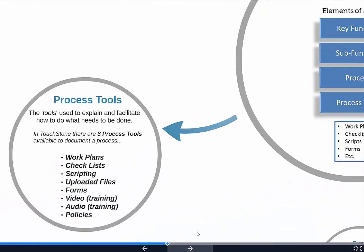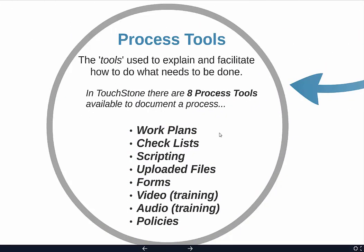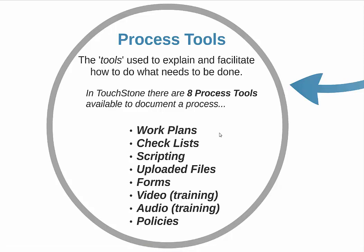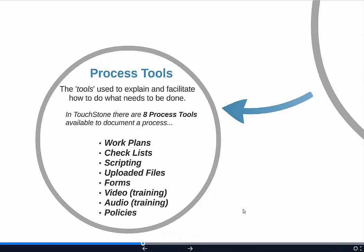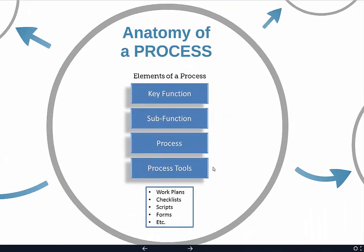In a Touchstone process, there are actually eight process tools. Every process will have a work plan — the detailed sequential workflow: do this, then do that. Some processes will have a checklist, some will have a script, some will have uploaded files like Word documents, PowerPoint presentations, PDF files, or spreadsheets. Some processes will have forms that get filled in, and some will have video and audio for training. Some processes have policies specific to that one process.